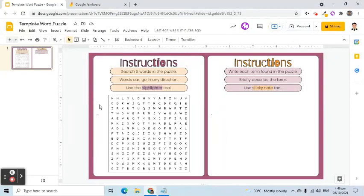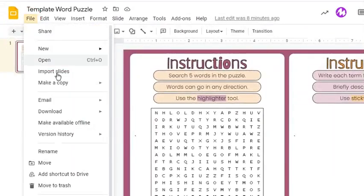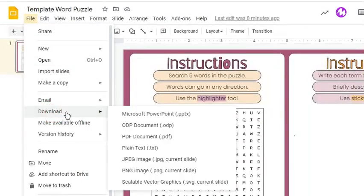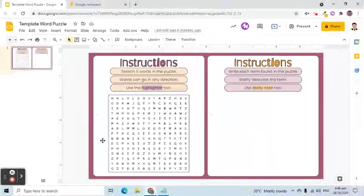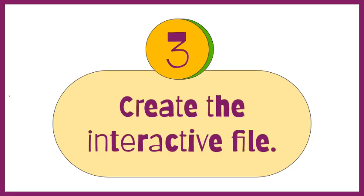Then I will adjust its size and location. After creating the template, go to the File tab, choose Download, and select PNG. As we can see, it has been downloaded. The third and final step is to create the interactive word puzzle file.